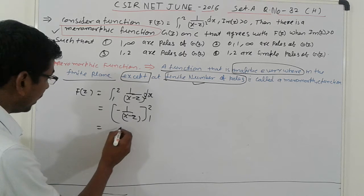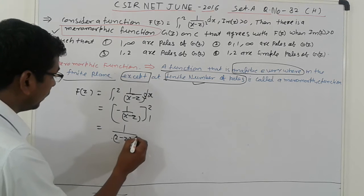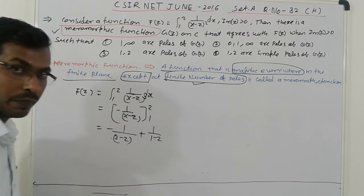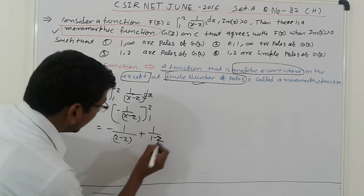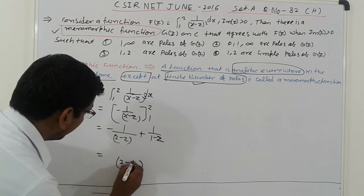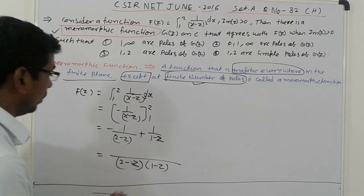Apply formula here, one upon upper and lower limit, two minus z, minus here, plus one upon one minus z. Here, one minus z. Simplify, taking limits, two minus z, and one minus z, divide, zero of z.